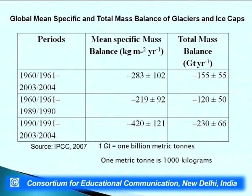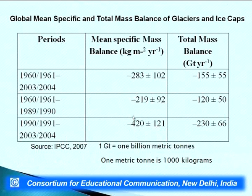In recent years, at least in the last century, there has been major retreat. This slide talks about the retreat of glaciers across the world. During 1960 to 2004, there was a negative mass balance of minus 283. If you divide this period into 1960 to 1990 and 1990 to 2004, you can see that in the later half, glacial loss actually increased, talking about accelerated warming-led retreat. It is going to be a serious problem in times to come if it continues in that manner.